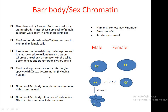In species with XY sex determination, including human beings, during early embryonic development when the zygote divides through cleavage to form blastomeres, 50% of cells in both male and female chromosomes are randomly inactivated. This process is known as lyonization.